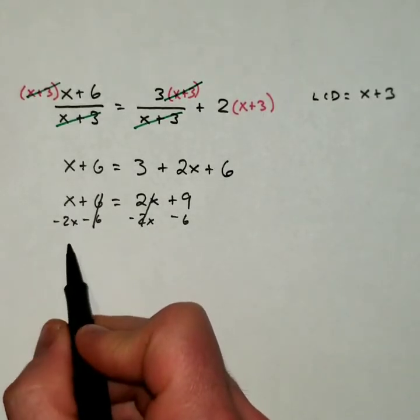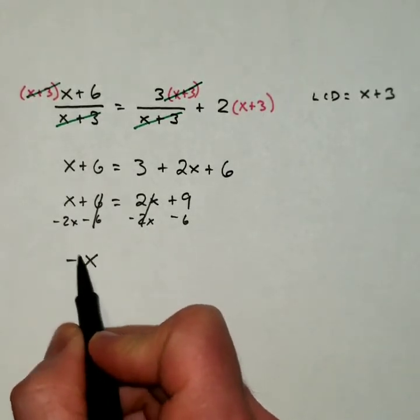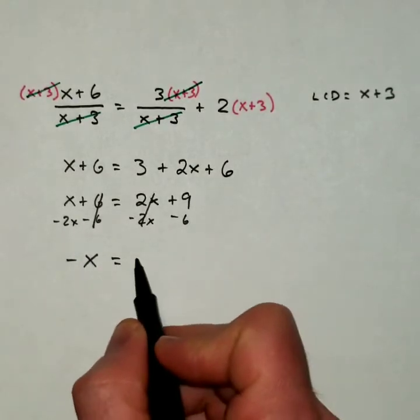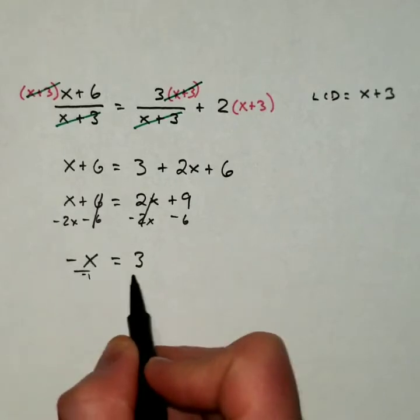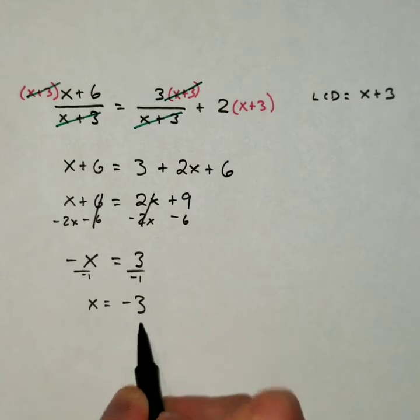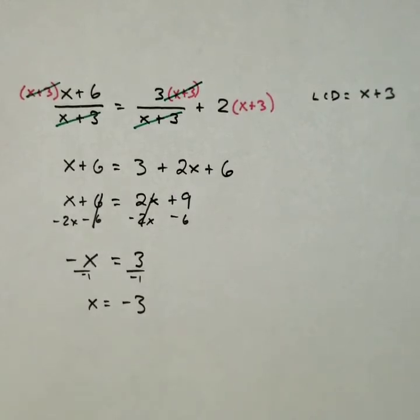And let's see, that's going to be a negative x. Right, positive 1 minus 2. And 9 minus 6 is 3. And I'm going to divide out the negative 1 here. We will get negative 3 as our answer.